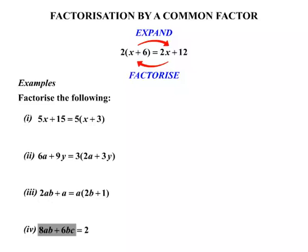Also, they may have a common letter. In this case, b. So we'd say 2b is a common factor, and we have the brackets then.